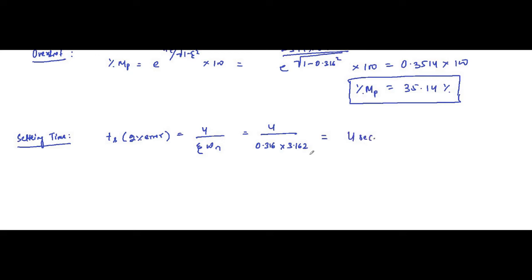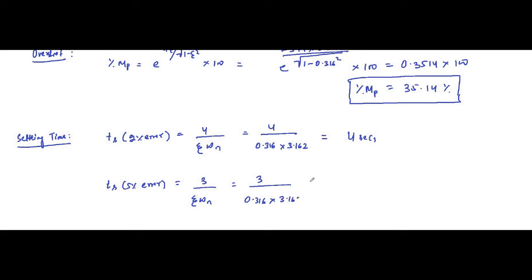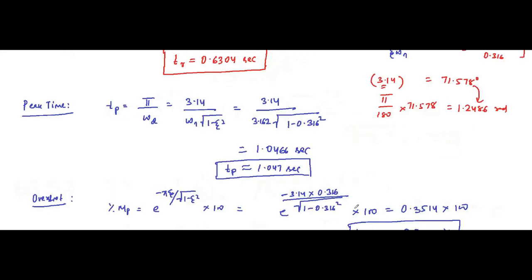For the 5% error criterion, settling time = 3 / (ζωn) = 3 / (0.316 × 3.162), which comes out to approximately 3 seconds. The output response normally settles within 2–5% of the steady state value. So the two settling time values are approximately 4 seconds (2% criterion) and 3 seconds (5% criterion).